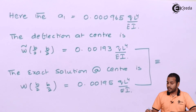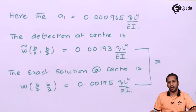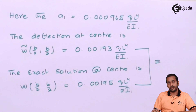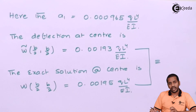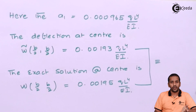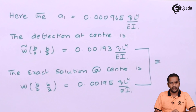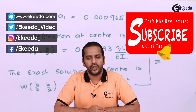The exact analytical solution at the center (b/2, b/2) is w = 0.00195 qL⁴/EI. The Galerkin solution and the analytical solution are almost the same — this is a very good result. With the method of least squares, we did not get anywhere near this with one term. So the Galerkin method is a very superior method compared to the method of least squares and point collocation methods. This was for the strong form Galerkin; in forthcoming classes, we will see how to apply this in weak form. Thank you for watching — stay tuned to Ekeda.